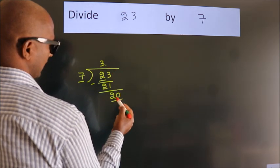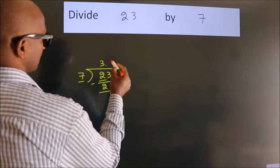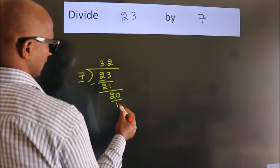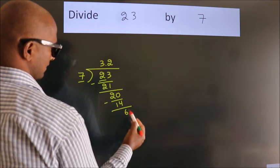So, 20. A number close to 20 in the 7 table is 7 twos, 14. Now we subtract. We get 6.